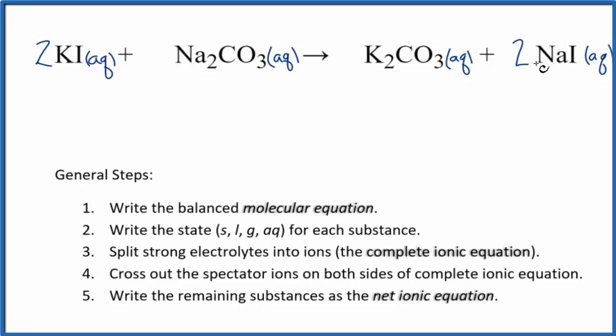So what will happen is, if we split this all up into its ions, and then we cross out the spectator ions, we'll cross everything out, because we'll have this all split into ions, same here. And when we cross it out, we'll end up with nothing.